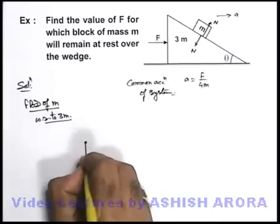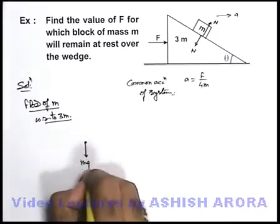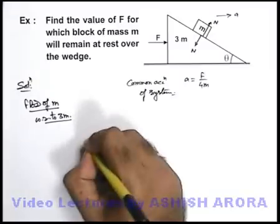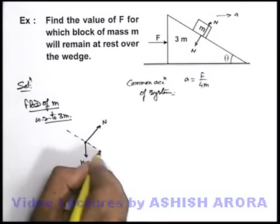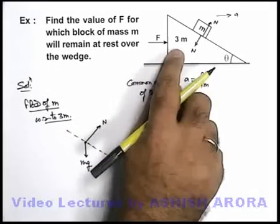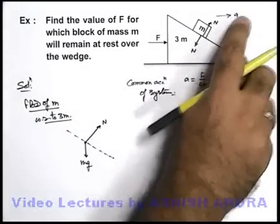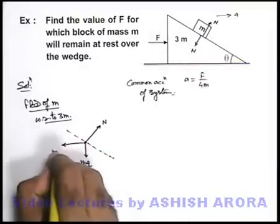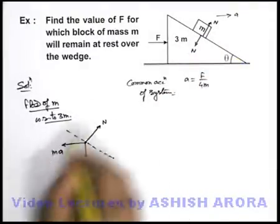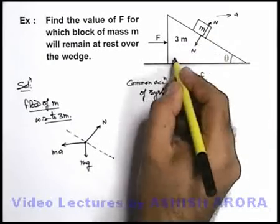So here, it is experiencing mg in downward direction. A normal reaction would be acting on it in the direction perpendicular to this incline. And due to the acceleration of this 3m, it will experience a pseudo force in opposite direction and its value is ma, where m is the mass of body and a is the acceleration of its reference.